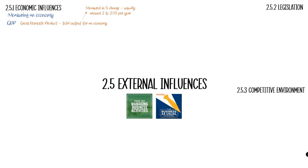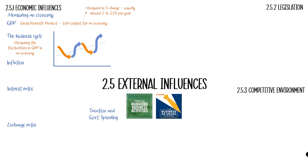We've also got a few other areas to measure an economy: the business cycle, inflation, interest rates, exchange rates, and taxation and government spending. We'll go through all of these in this video. The business cycle measures the fluctuations in GDP in an economy. What you typically find — and it doesn't always last the same amount of time — is that it works in a pattern where GDP goes down and up repeatedly.